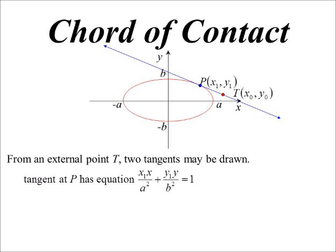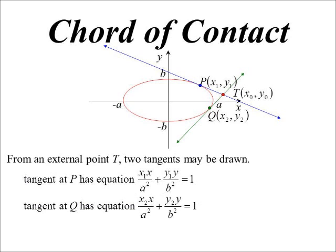There's one going through the point x1, y1. We know we could derive that equation. It would end up being x1x on a squared plus y1y on b squared is equal to 1. And then we'd have another one, which we'll go through, we'll call Q, which we've called x2y2. And it would have the equation x2x on a squared plus y2y on b squared is equal to 1. So we could derive either of those things.